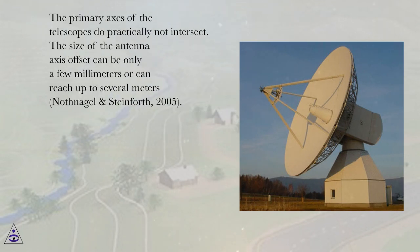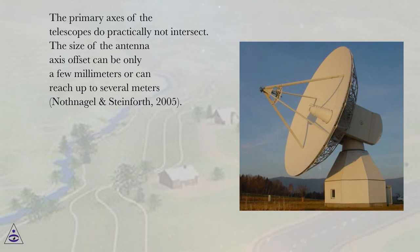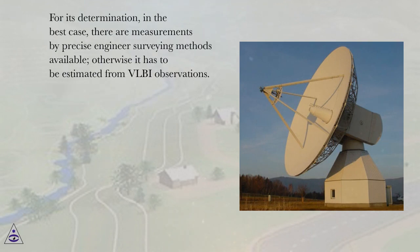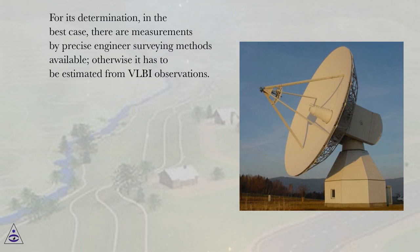The primary axes of the telescopes do practically not intersect. The size of the antenna axis offset can be only a few millimeters or can reach up to several meters (Nothnagel and Steinforth, 2005). For its determination, in the best case, there are measurements by precise engineering surveying methods available; otherwise it has to be estimated from VLBI observations.